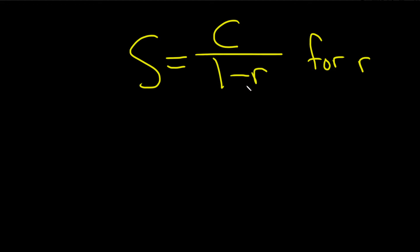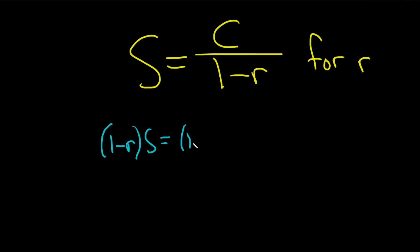So we need to start by getting rid of the fraction. To do that, we can multiply both sides by 1 minus r — putting 1 minus r on the left and 1 minus r on the right.